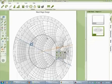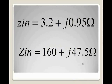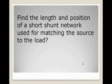So, this is our input impedance, which is equal to 3.2 plus J 0.95 Ohm. By multiplying it with characteristic impedance, we get 160 plus J 47.5 Ohm. Our last part of the question is to find the length and position of a short-shunt network used for matching the source to the load.